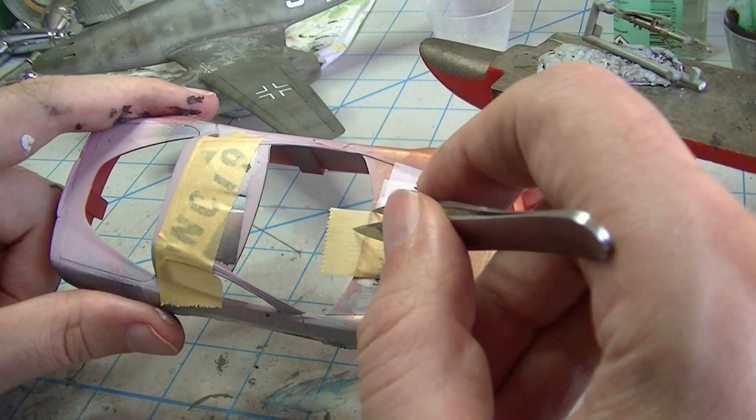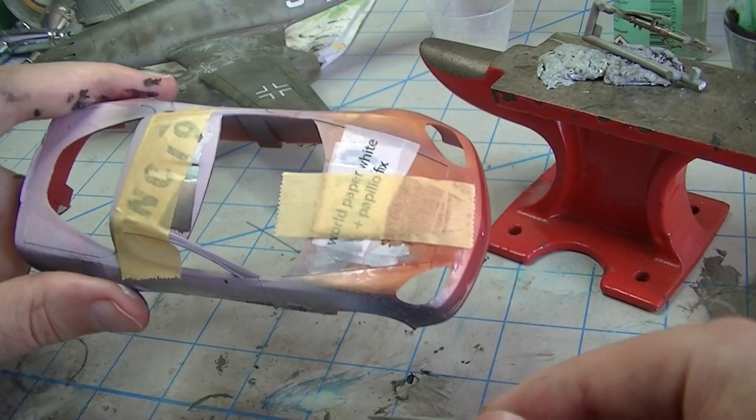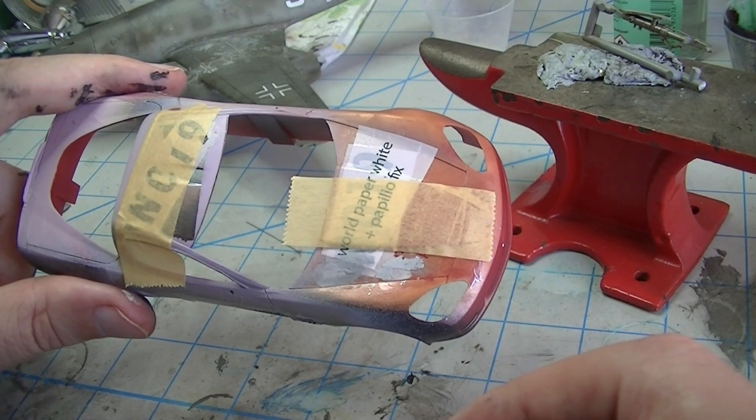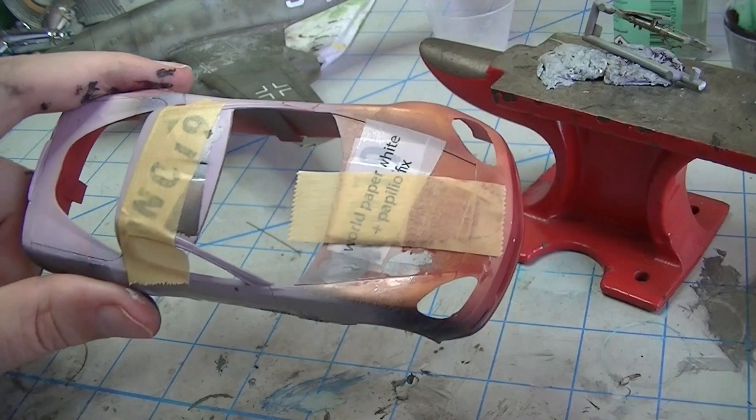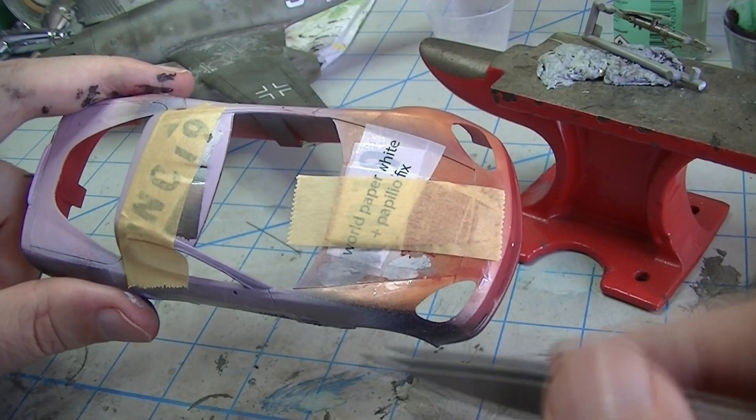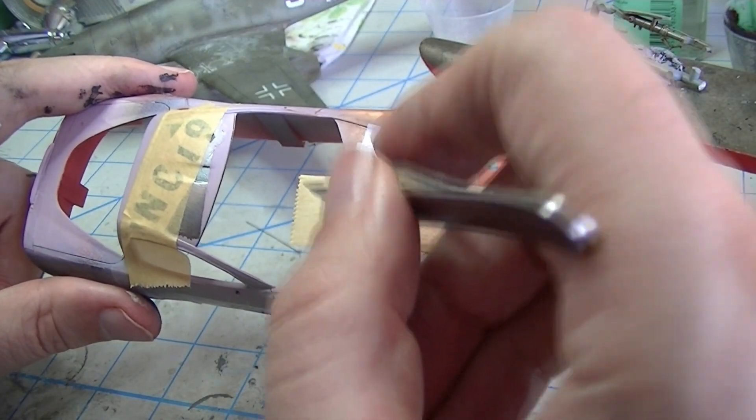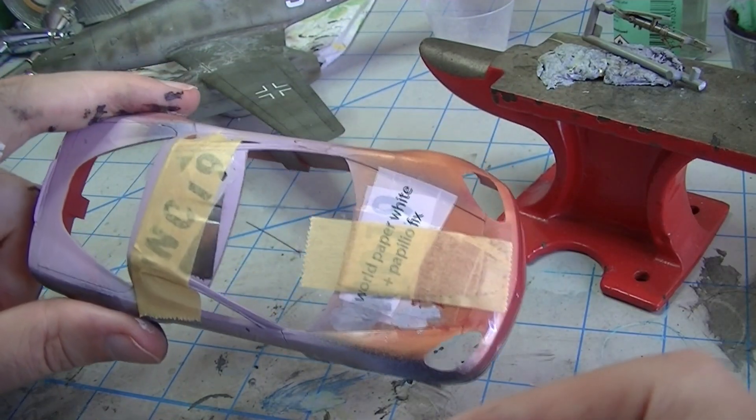What that does is right there, it creates basically what's like a stress concentration. If I just take and grab that piece of tape and rip it straight off, there's a good chance that I'm going to get a peel starting right there in that corner. But I'm going to show you how to avoid that.